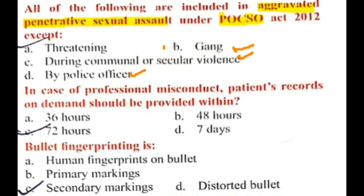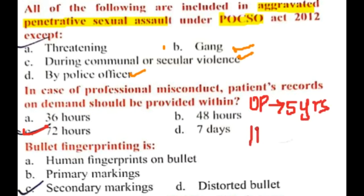The next question concerns professional misconduct: patient records on demand should be provided within 72 hours. OP (outpatient) records should be kept in the hospital for 5 years, whereas inpatient records should be kept for a period of 10 years.